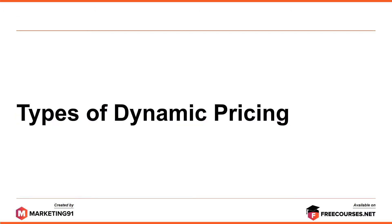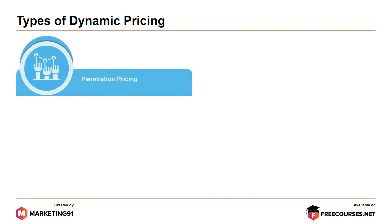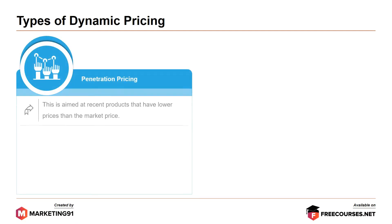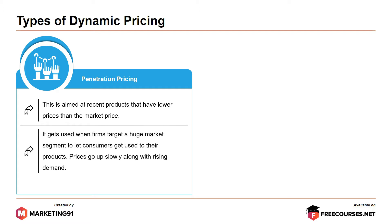Moving on to the types of dynamic pricing. First, penetration pricing. This is aimed at recent products that have lower prices than the market price. It gets used when firms target a huge market segment to let consumers get used to their products. Prices go up slowly along with rising demand.